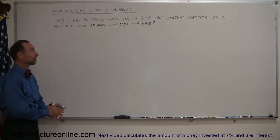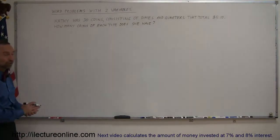Welcome to iLecture Online and here's another example of how to do word problems using two variables. So let's read the problem. It says Kathy has 30 coins consisting of dimes and quarters that total $5.10. How many coins of each type does she have?